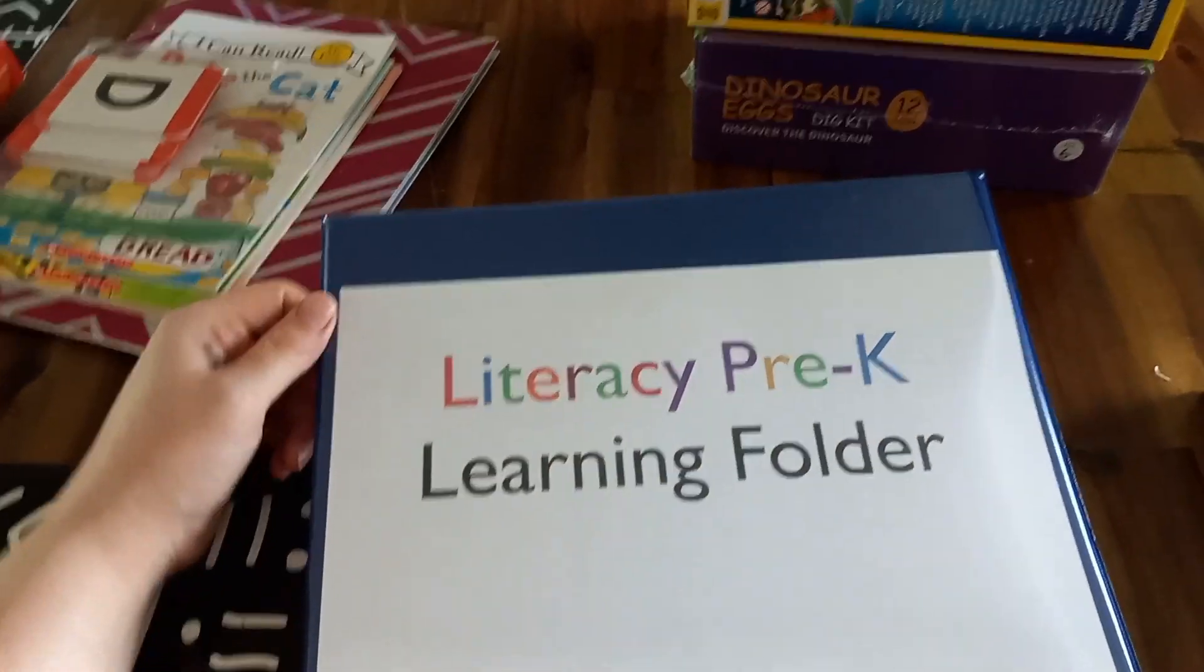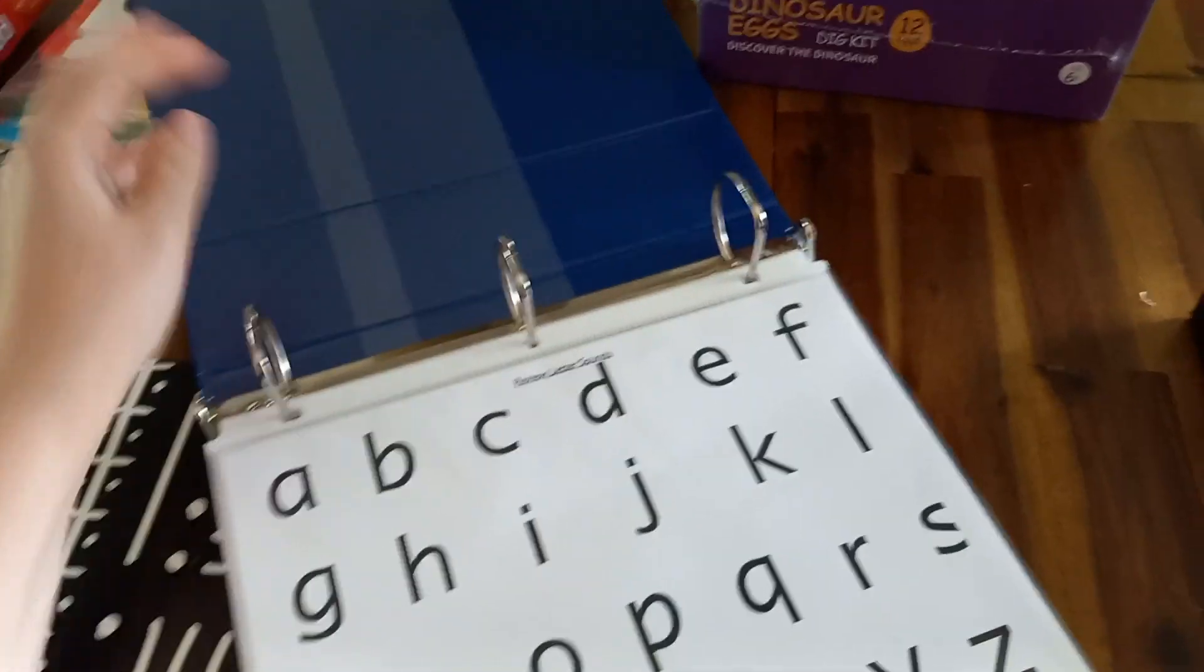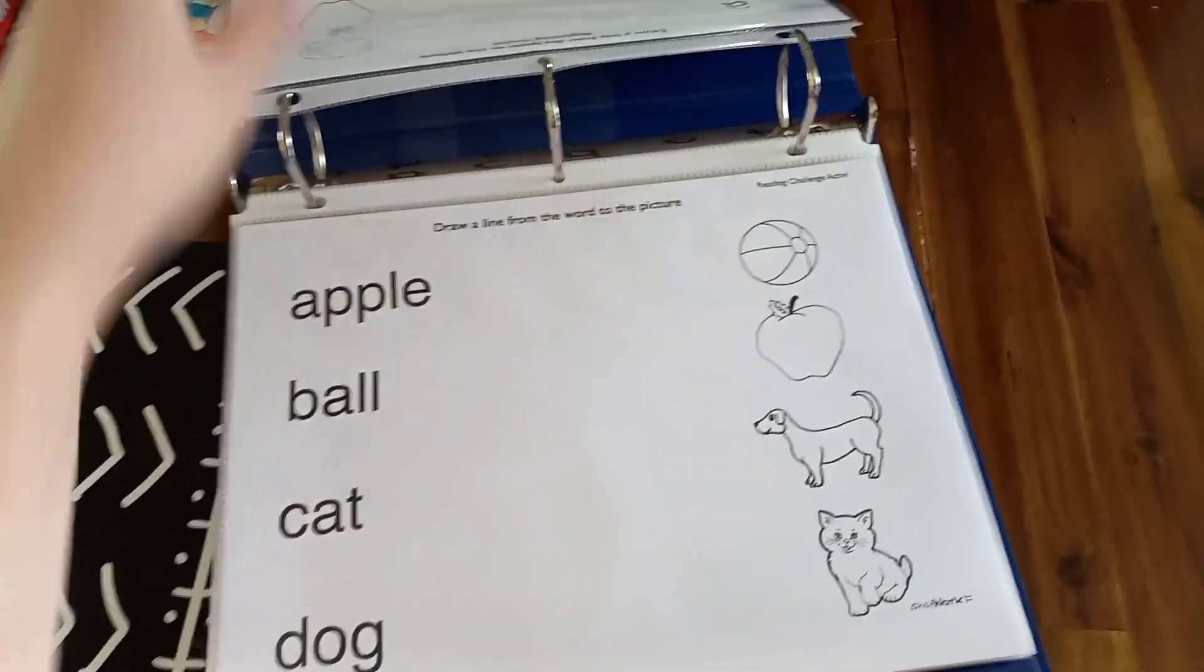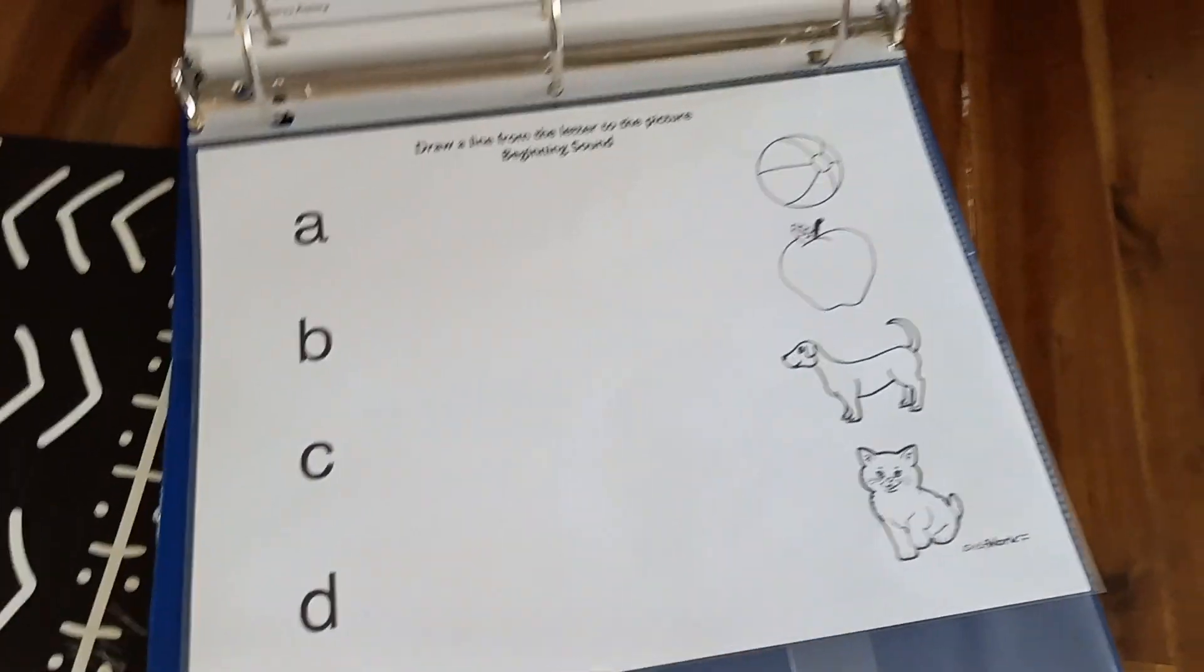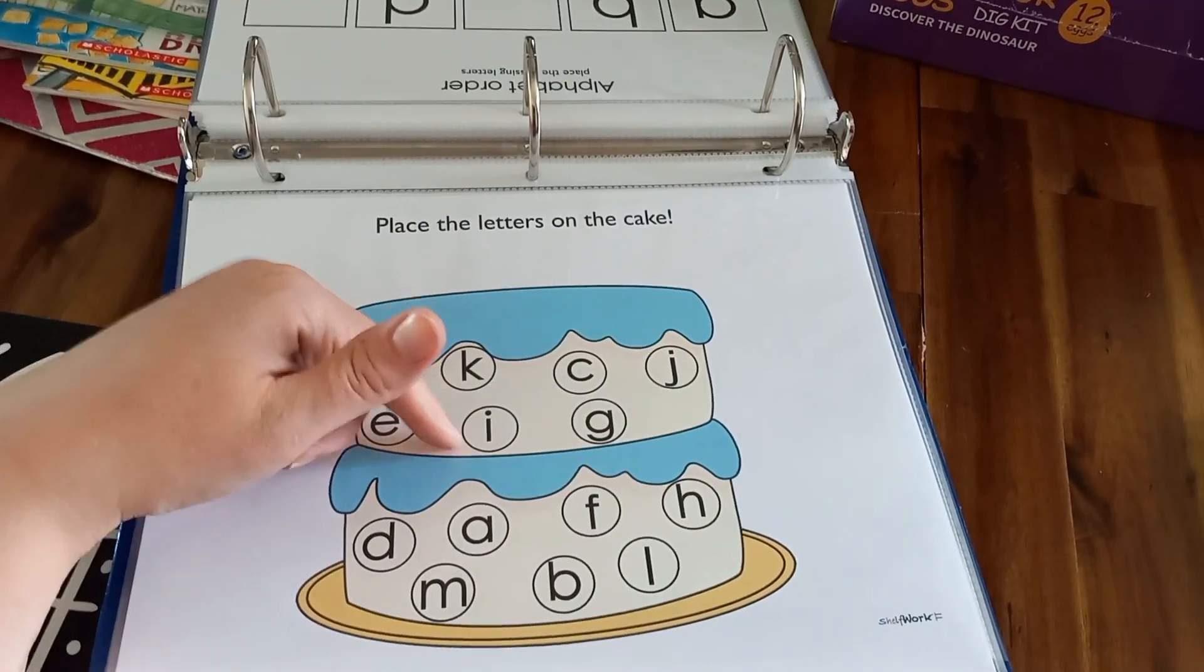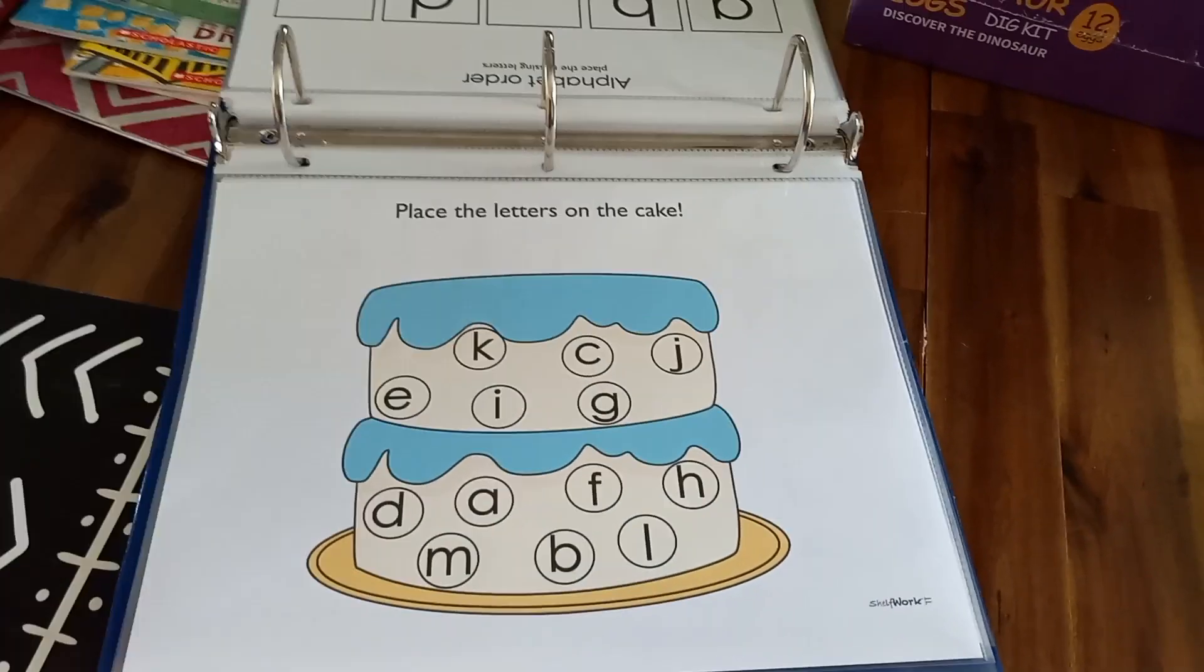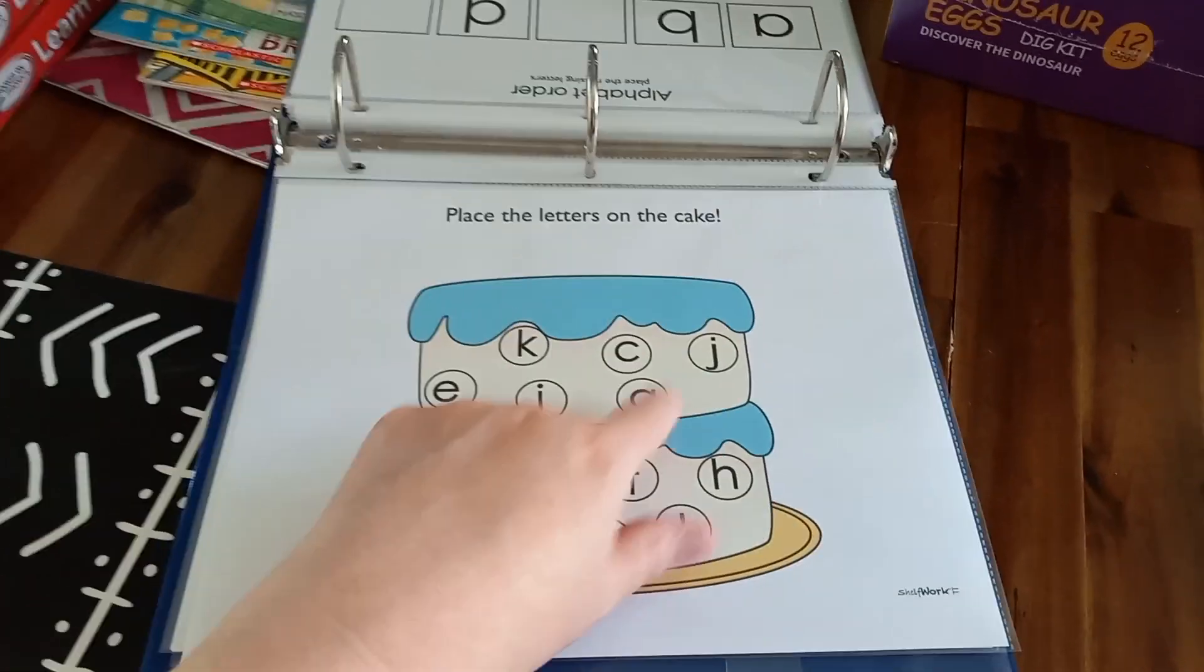Then I also have this literacy learning folder. As I said before, I put it in a binder and then in sheet protectors so they can use it over and over again. We review the letter sounds. And then it has different activities that you do. This one is draw a line from the letter to the right picture. We have place the letters on the cake. You can use bottle cap letters like bottle caps with a little letter written on them to put them on the cake. Or this printable did come with letters that you could laminate and use, which is what we do. And you just have the child match the letter. So put the E with the E, the K with the K. And then I always like to go over each letter that they did.